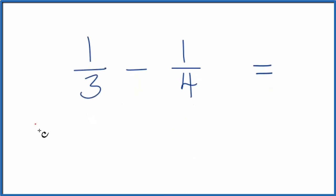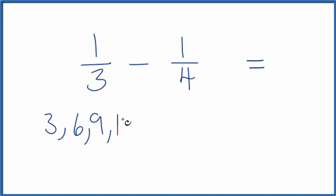So if I look at the multiples of 3, I have 3, 6, 9, 12, 16, and then for 4 I have 4, 8, 12. And there it is - 12 is the lowest common multiple of both 3 and 4.